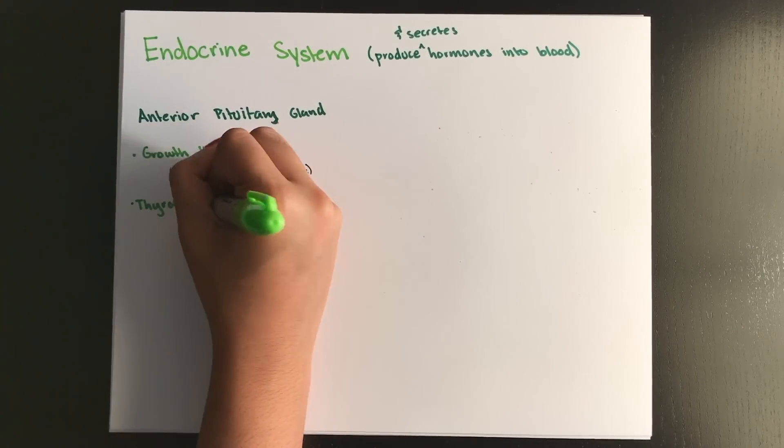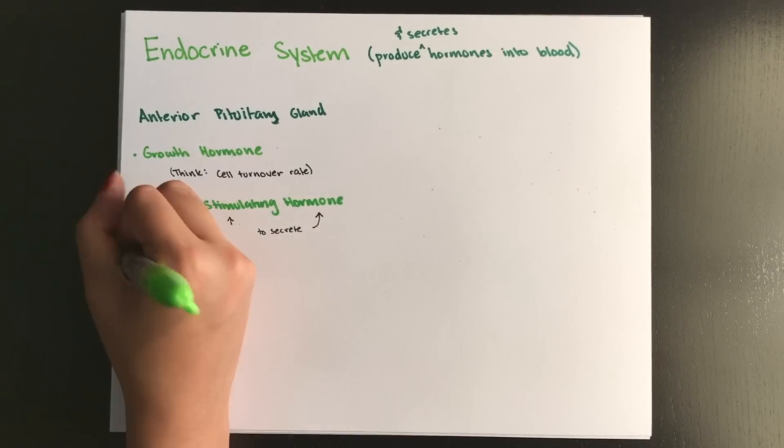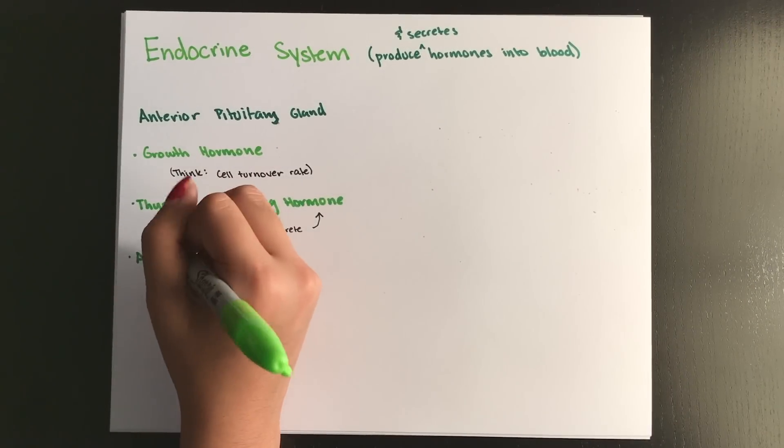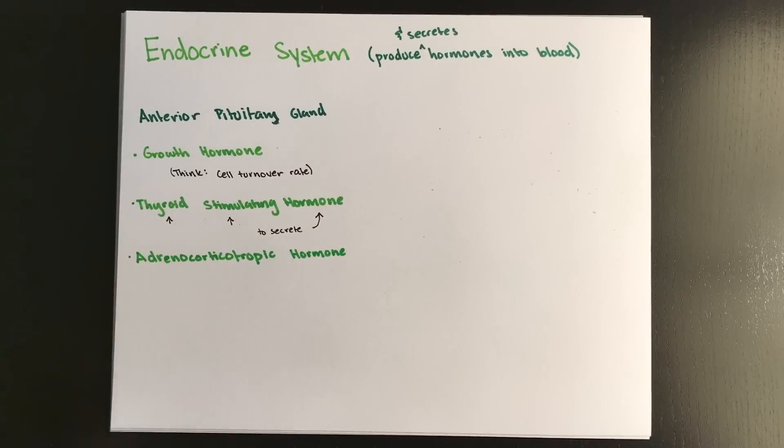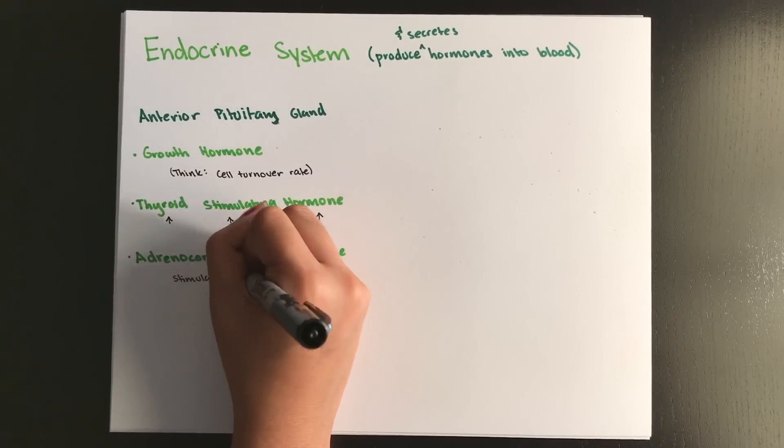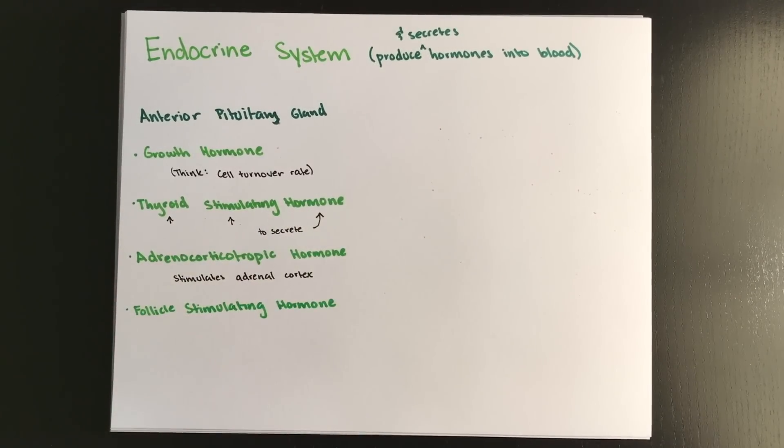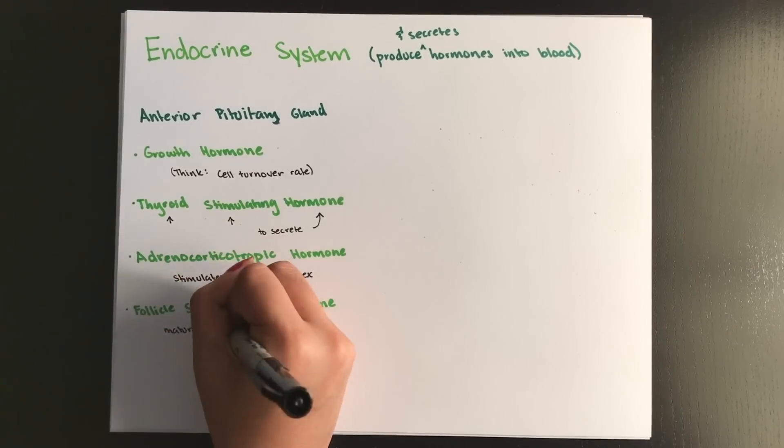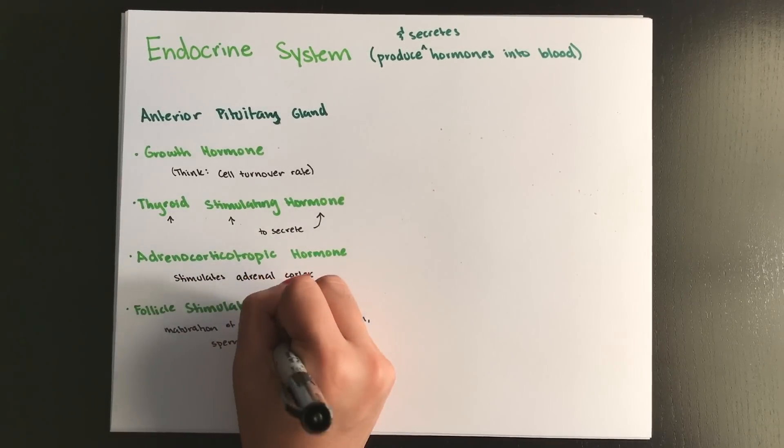Next, we have thyroid stimulating hormone, which stimulates your thyroid gland to secrete even more hormones. Next, you have your adrenocorticotropic hormone, which stimulates the adrenal cortex to secrete, again, even more hormones. Next, you have your follicle stimulating hormone, which targets the reproductive organs. So in females, it will cause the ova maturation and the release of estrogen. And in males, it will stimulate the creation of sperm.